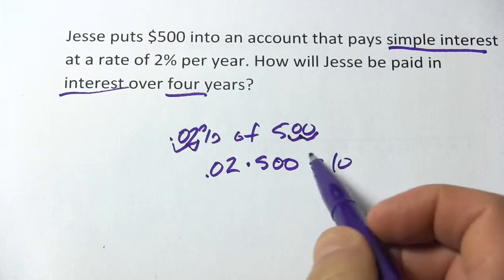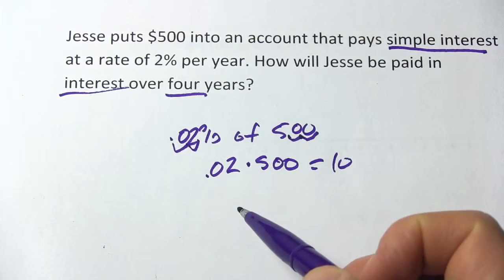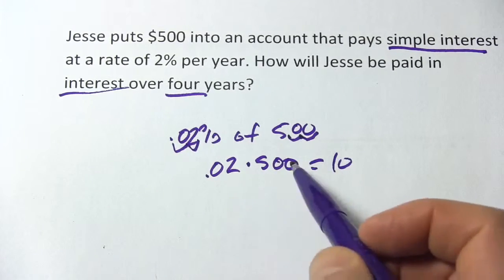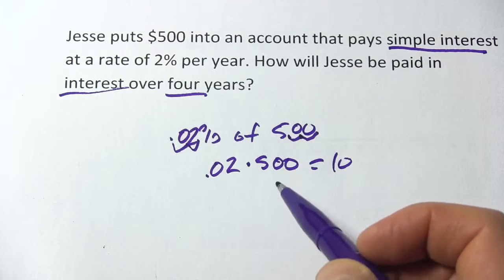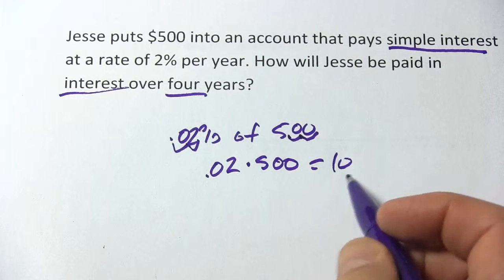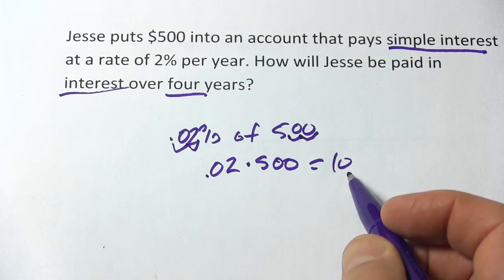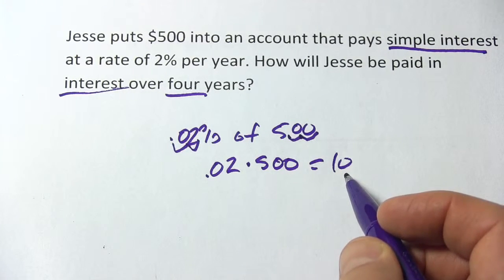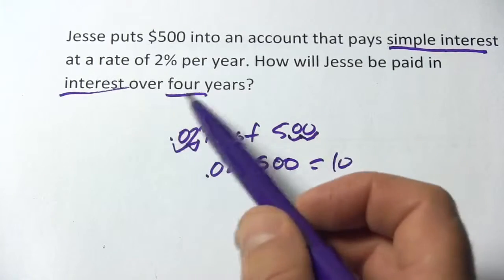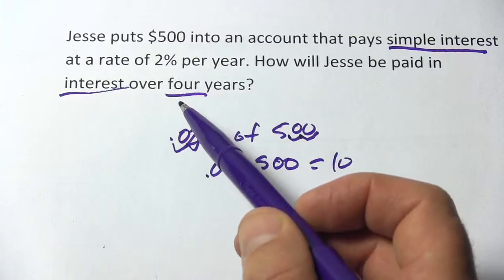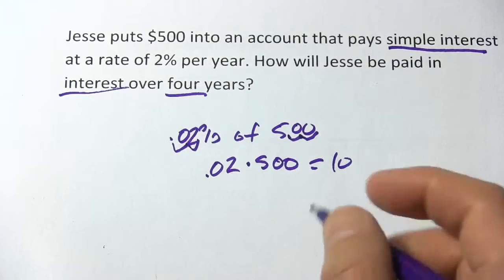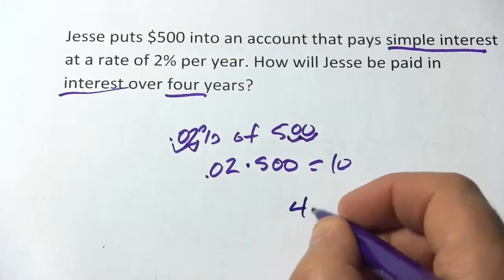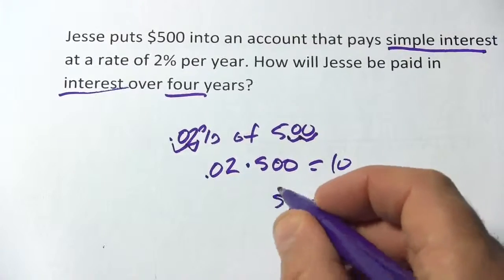If that was too complicated or doesn't make sense, just do the multiplication by hand and you get $10 per year. So how much interest does Jesse earn over 4 years? 4 times 10 is $40.